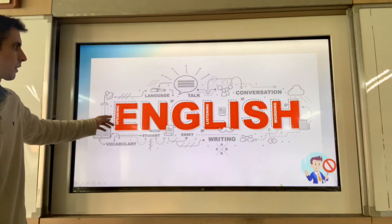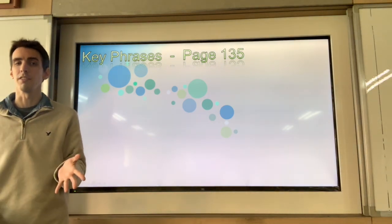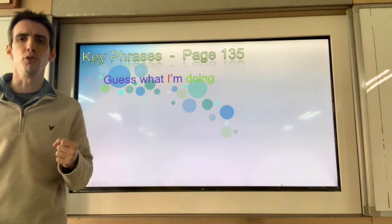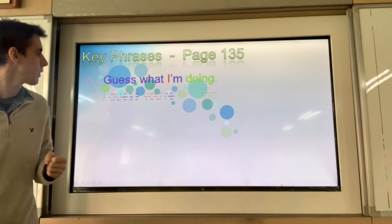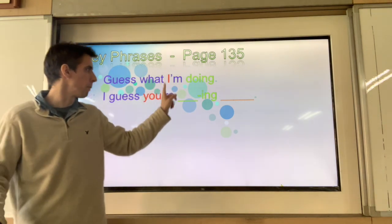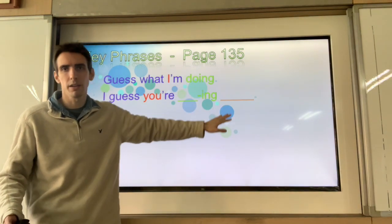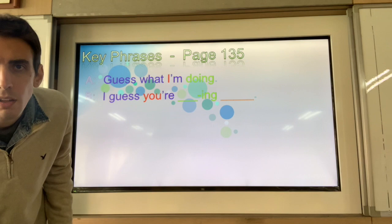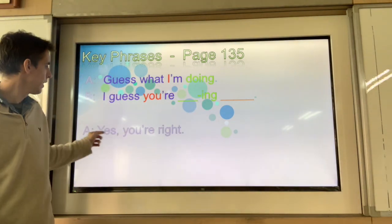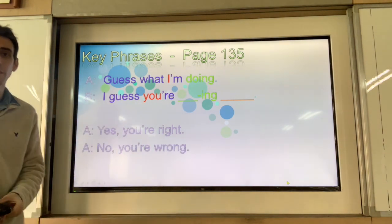All right, guys. Here's the new stuff. The new stuff is easy — I think you'll find it easy. The key phrase is: Guess what I'm doing. I guess you're blanking blank. So what am I doing? Yes, you're right. No, you're wrong. Easy enough, right? Guess what I'm doing. I guess you're blank. Yes, you're right. No, you're wrong.